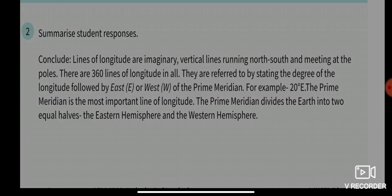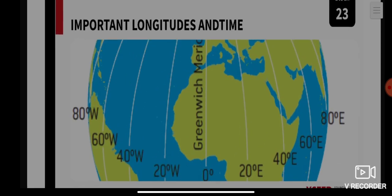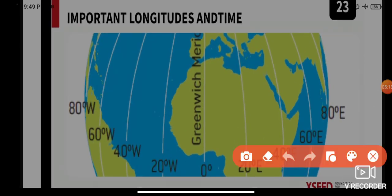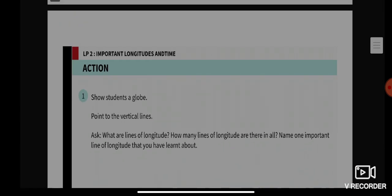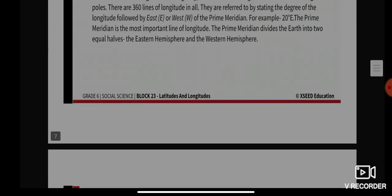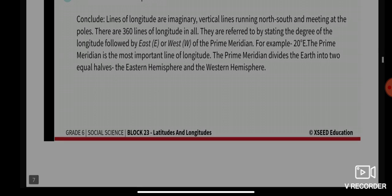Lines of longitude are referred to by stating the degree of longitude followed by east or west of the prime meridian — for example, 20 degrees east. The prime meridian is the most important line of longitude. It divides the Earth into two equal halves: the Eastern Hemisphere and the Western Hemisphere.